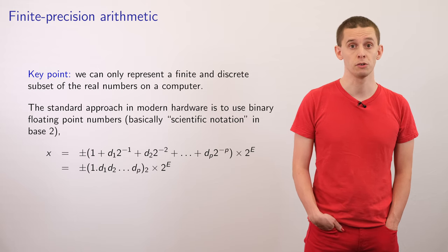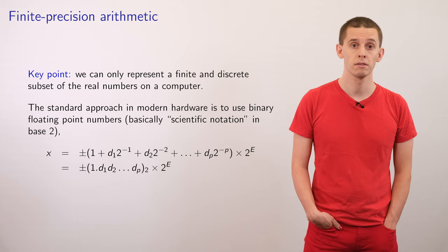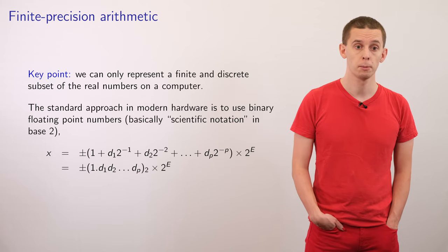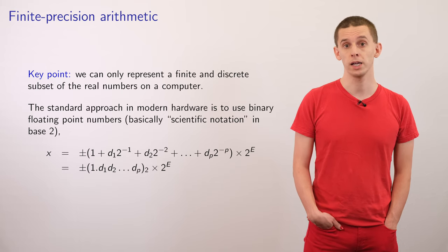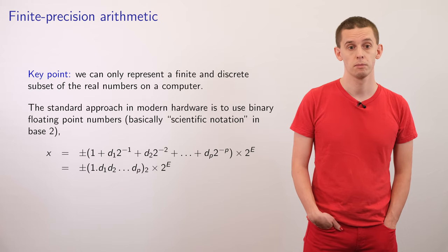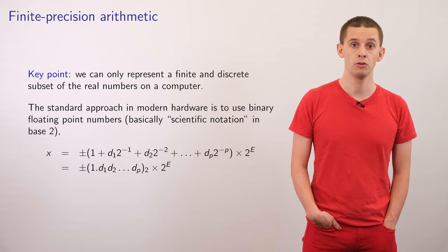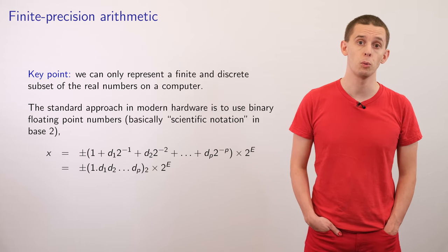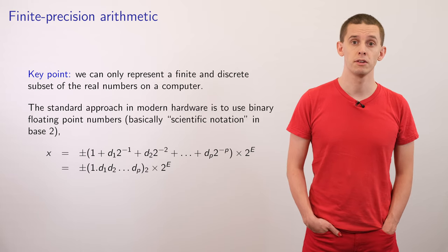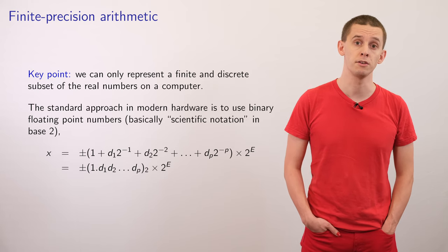The same benefits can be used on computer hardware, but here we do everything in a binary number system, base 2. If we want to represent a number x, then we can write it as plus or minus (1 + d1·2⁻¹ + d2·2⁻² + ... + dp·2⁻ᵖ) multiplied by 2 to the e. Equivalently, we could write that as the binary expansion ±1.d1 d2 ... dp × 2^e. All of the digits d are binary numbers, so they're either 0 or 1. We can always ensure that the first number in the expansion is equal to 1 by adjusting the value of e. The one exception is the number 0, but that's represented in a different way.